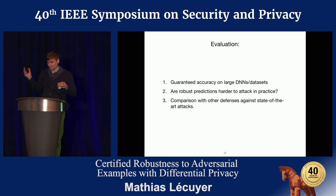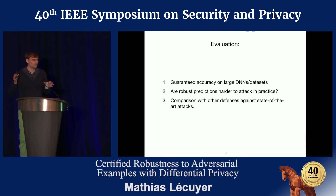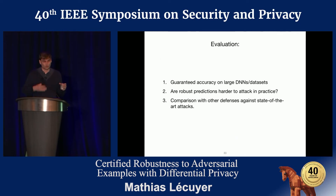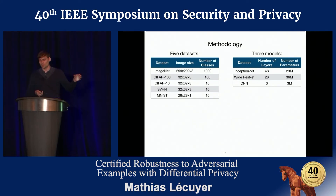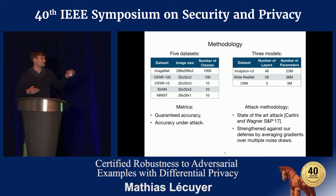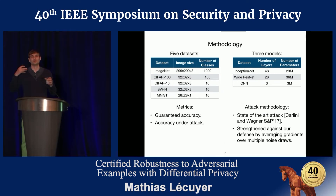We evaluated PixelDP addressing several questions: can we guarantee any accuracy under attack for ImageNet? Are those robust predictions harder to attack in practice? And how does it compare with existing methods? We ran evaluation on five datasets and three models, looking at guaranteed accuracy and accuracy under attack, using the state-of-the-art attack strengthened for our method to account for the noise in computation.